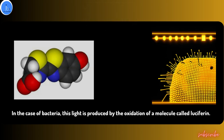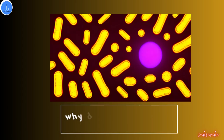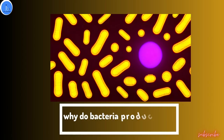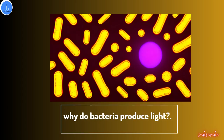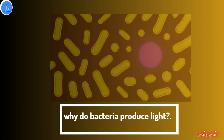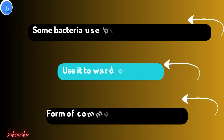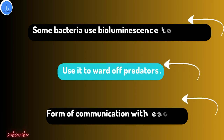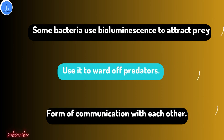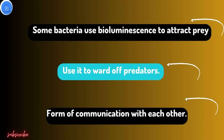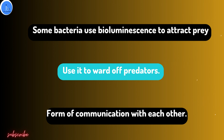Why do bacteria produce light? Well, it can serve a variety of purposes. For example, some bacteria use bioluminescence to attract prey, while others use it to ward off predators. Some bacteria even use bioluminescence as a form of communication with each other.